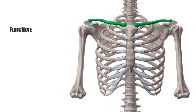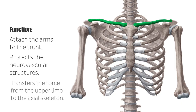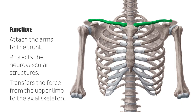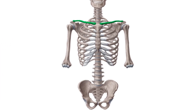The function of the clavicle is to attach the arms to the trunk. It also protects the neurovascular structures which supply the arm and transfers the force from the upper limb to the axial skeleton. Because it lies so close to the surface of the body, the length of the clavicle can be easily palpated and is visible on some people. It is the most commonly fractured bone in the body because of its location and its function as a stress absorber.